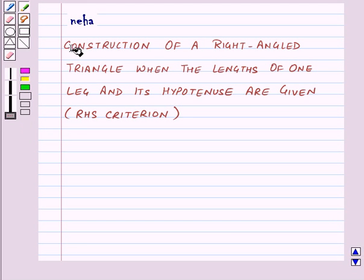Hi and welcome to the session. Let us learn the construction of a right-angled triangle when the lengths of one leg and its hypotenuse are given. That is RHS criterion.